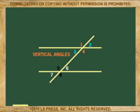Notice that the following four pairs of angles are vertical angles: one and four, two and three, five and eight, six and seven.